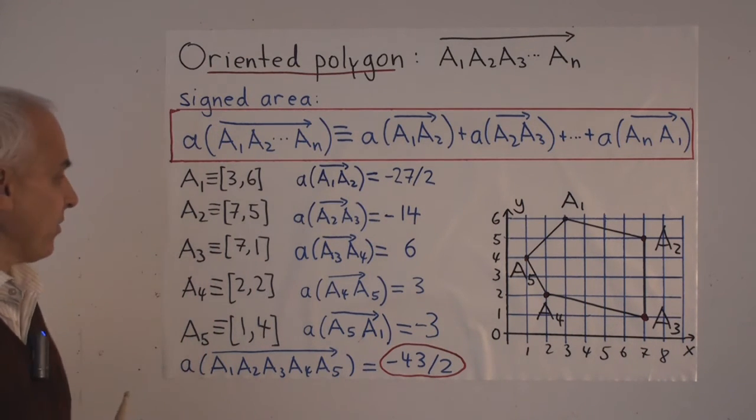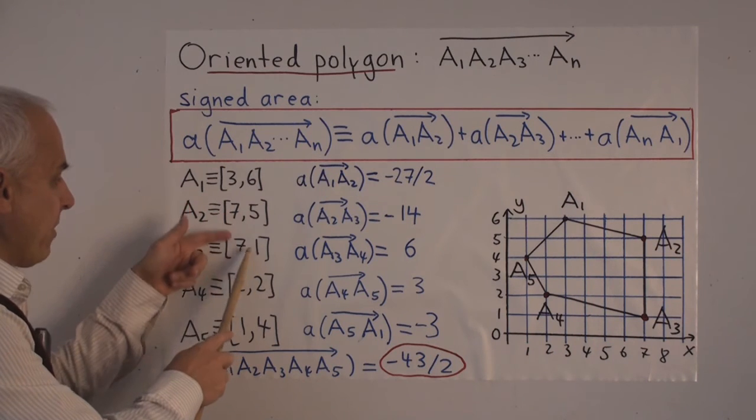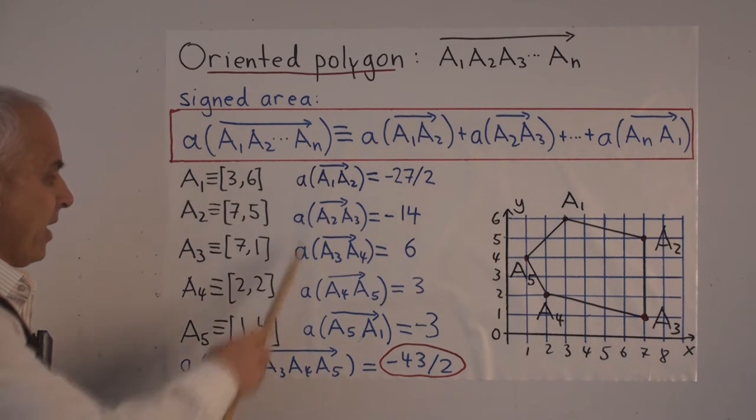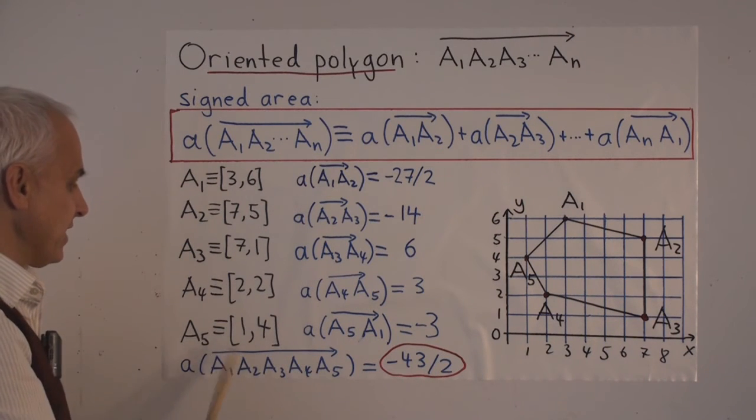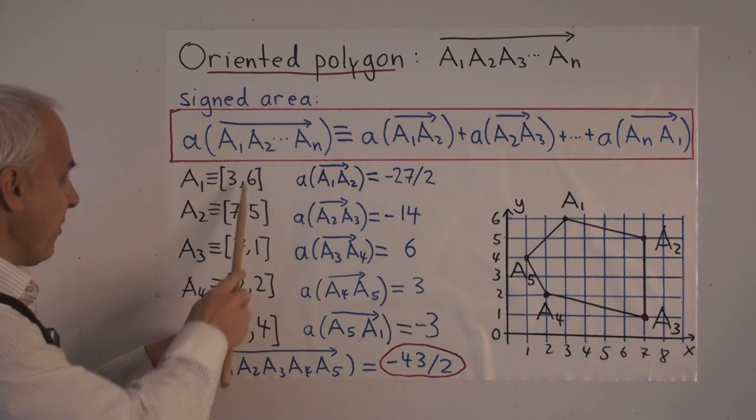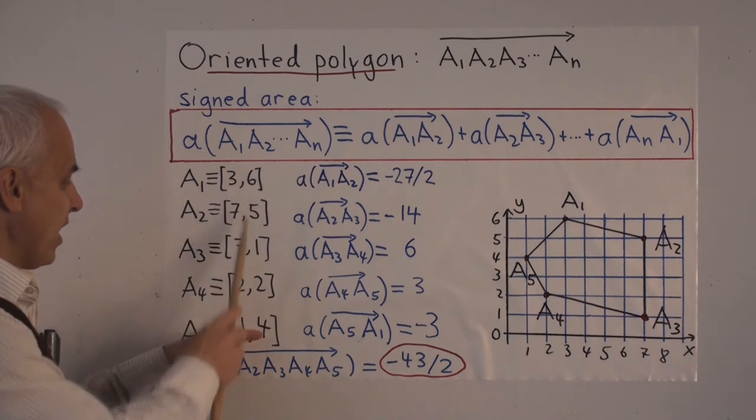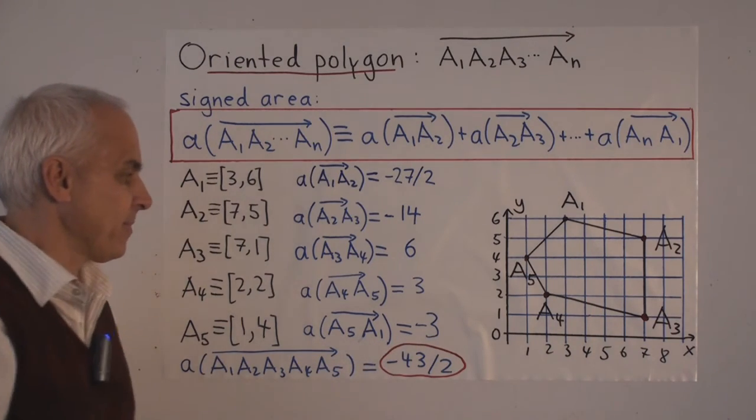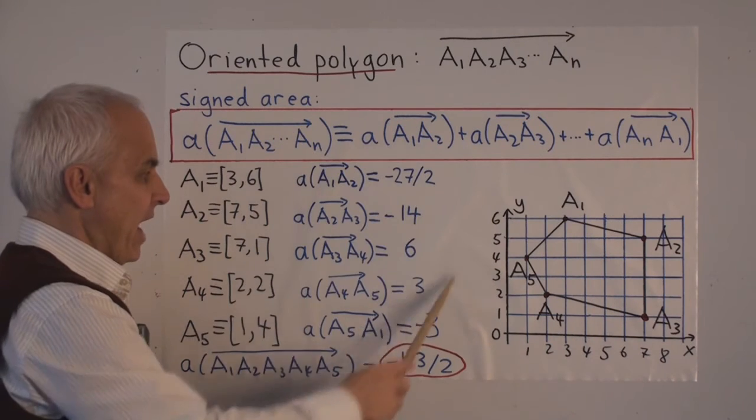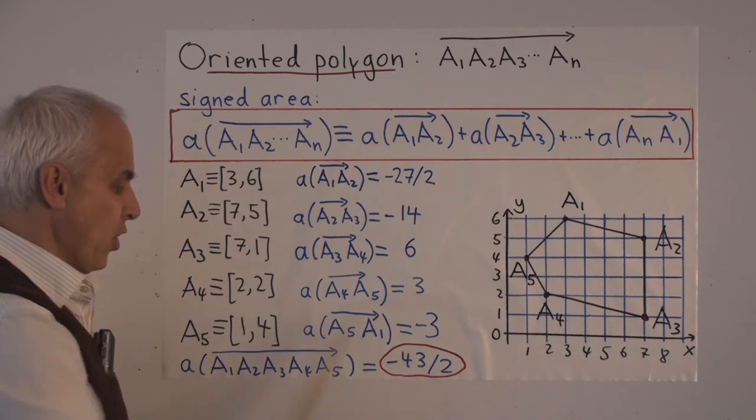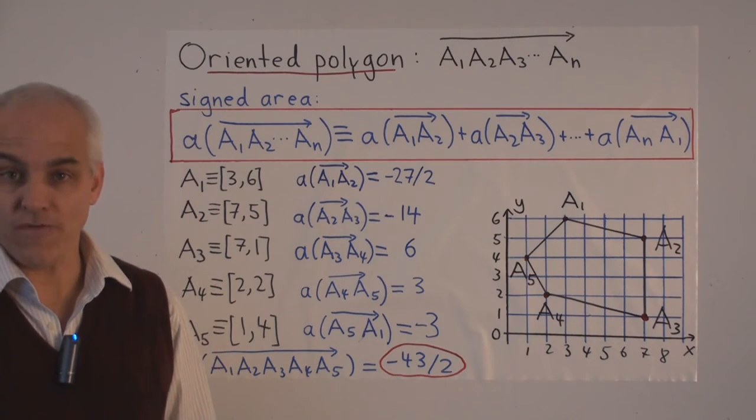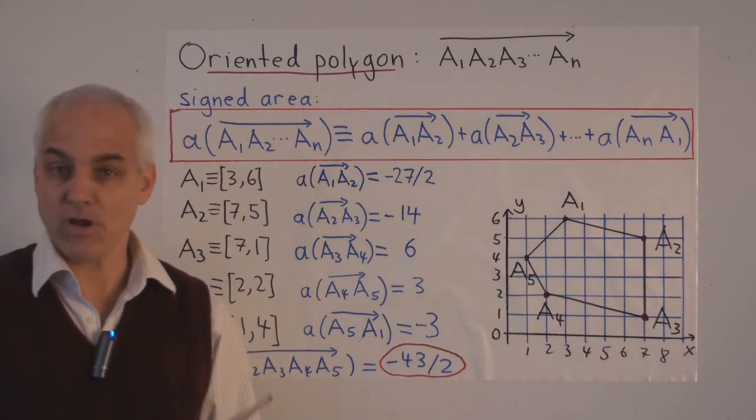The signed area of the side A2, A3. 7 times 1 minus 7 times 5, all over 2. That's minus 14. We keep going. The last one is the signed area of the side A5, A1. So now we have to go 1 times 6 minus 3 times 4, all over 2. That's minus 3. So there are five such terms. And when we add them all up, we get minus 43 over 2. And that is the signed area of this oriented polygon.